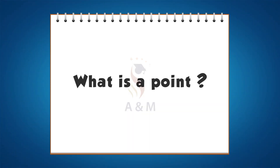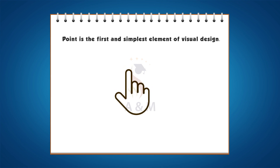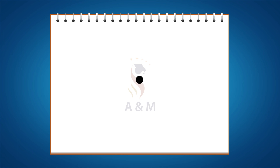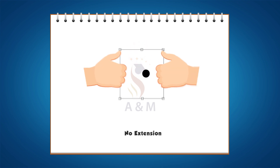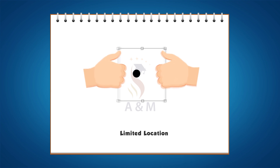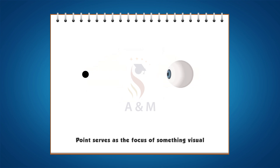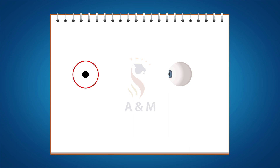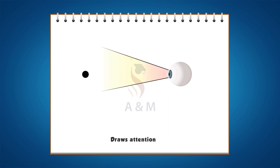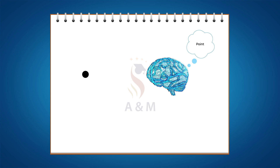What is a point? A point is the first and simplest element of visual design. A point is an element that has position but no extension. It is a single mark in space with a precise but limited location. A point serves as the focus of something visual and therefore draws attention. Even if there is only one point or one mark on a blank page, our brains will make it mean something.